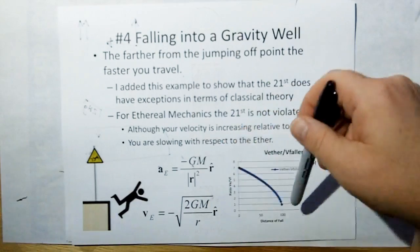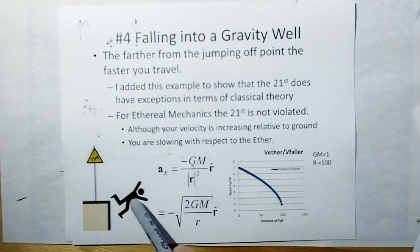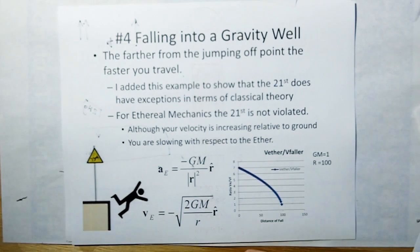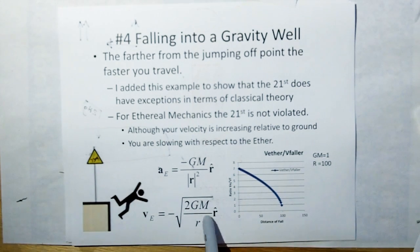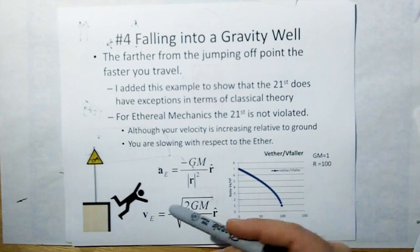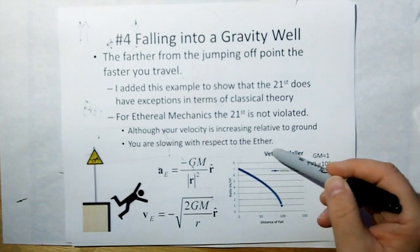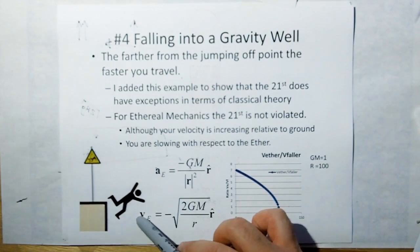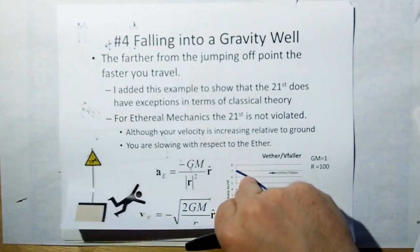Now if you guys want to run this yourself, I did this in Excel — it double-checked me. For simplicity I just set GM equal to 1 so I don't have to deal with all these complicated constants. I start the object falling at 100 units — I guess 100 meters in this case — to a point source at 0, then computed the velocity of the ether at every different point, and then computed the acceleration based on the standard gravity model. Then I took the velocity of the ether at any point divided by the object's velocity, which requires numerical integration. Maybe I did it wrong — you guys can check that out and see if you get the same answer I got. That's possible; I am human, I do make mistakes.